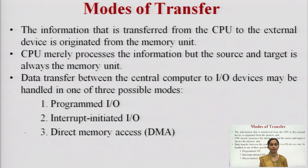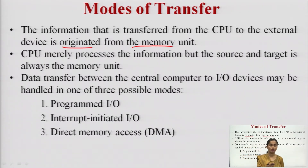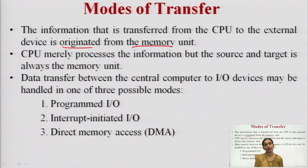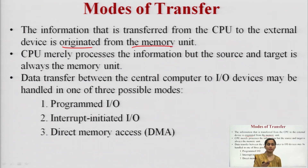The information transferred from the CPU to the external device is originated from the memory unit. If the memory unit and IO device want to communicate — for example, typing from the keyboard and saving to a memory device — the memory device and IO device are communicating with each other with the help of CPU. In that case, as these two devices are different and CPU is continuously monitoring them, CPU is just wasting its CPU cycles and not doing anything productive.